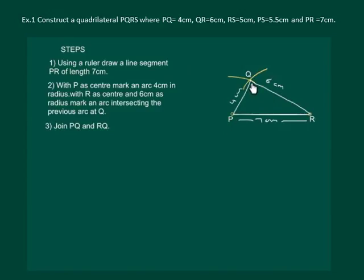We have PQ equal to 4 cm and RQ equal to 6 cm. Similarly, with P as center and 5.5 cm as radius, mark an arc on opposite side of Q.